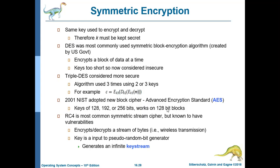Symmetric encryption uses the same key to encrypt and decrypt — K must be kept secret. DES, the Data Encryption Standard, was the most commonly used symmetric block encryption algorithm created by the US government, but its key is too short and is now considered insecure. Triple DES is more secure, using the algorithm three times with two or three keys. In 2001, NIST adopted the Advanced Encryption Standard, or AES, with keys of 128, 192, or 256 bits working on 128-bit blocks.